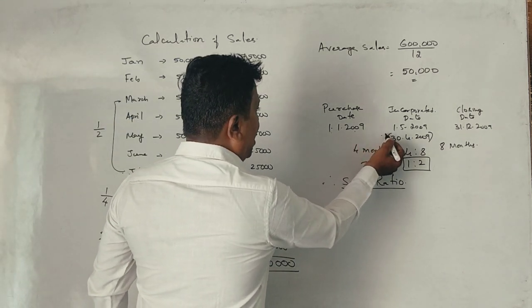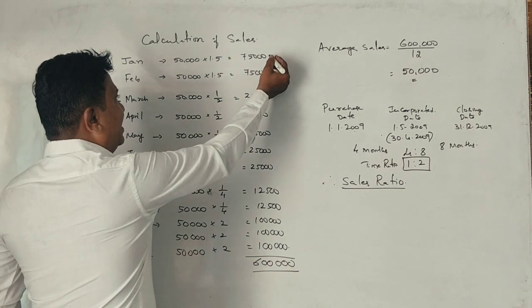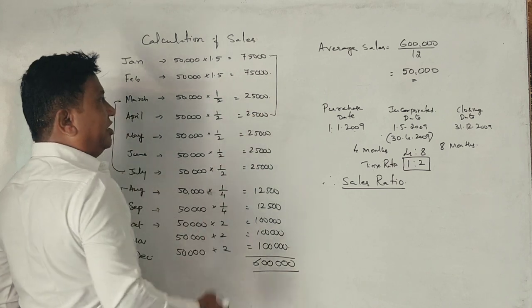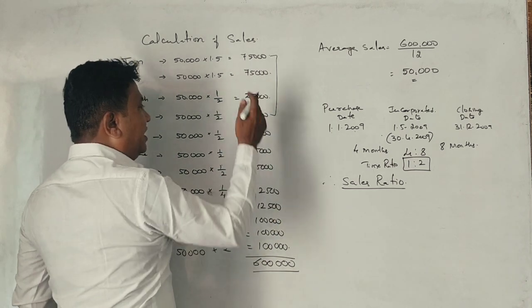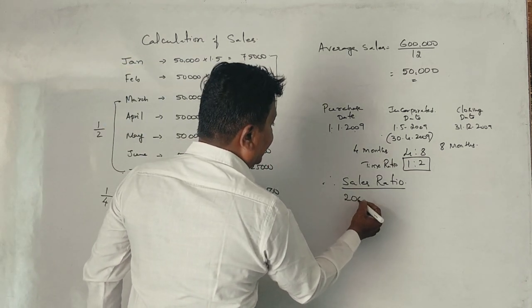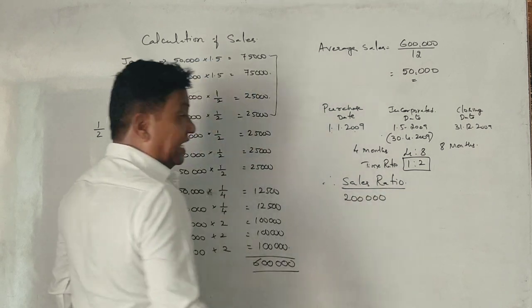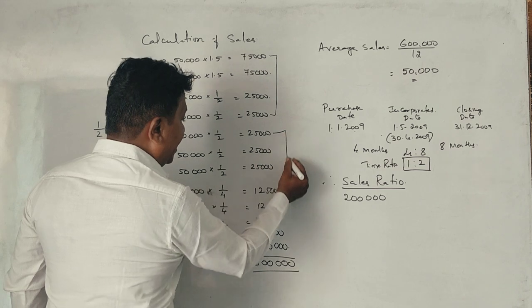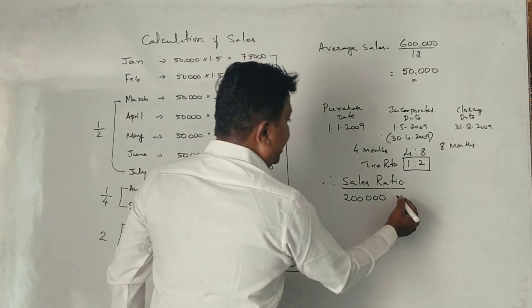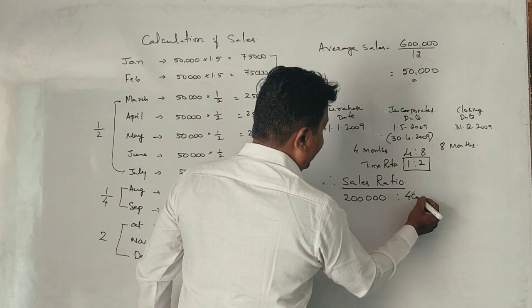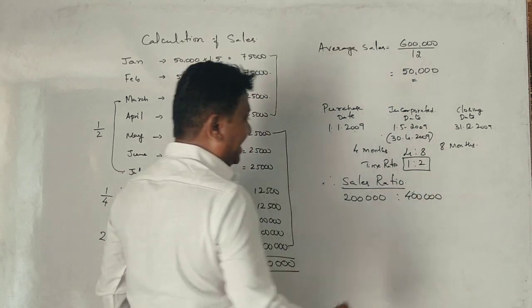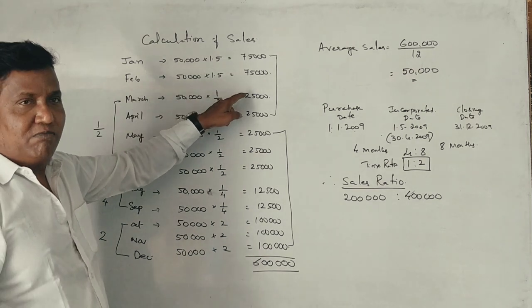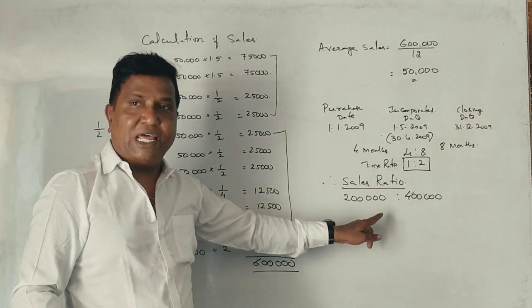So January, February, March, April - the total for these four months. May to December for the remaining months. January and February: 2 million in sales. The calculation for each period gives us the total sales breakdown.